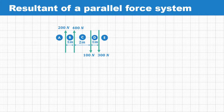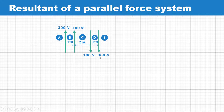These are the Bow's notation — A, B, C, D, and E. AB represents the 200 Newton force, BC represents the 400 Newton force, CD represents the 100 Newton force acting in the downward direction, and DE represents the 300 Newton force acting in the downward direction.